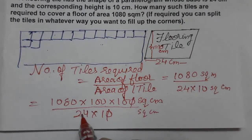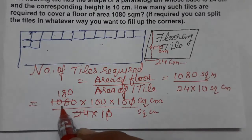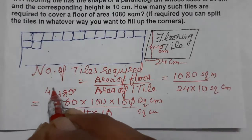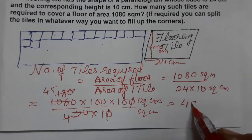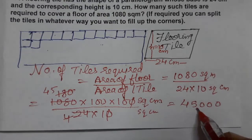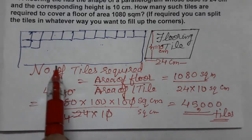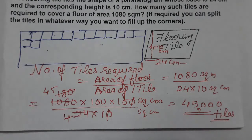Dividing 10,800,000 by 240, we get the number of tiles required as 45,000 tiles. I hope you understood questions 3 and 4 both. Thank you so much for watching the video.